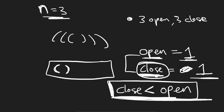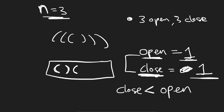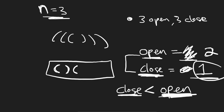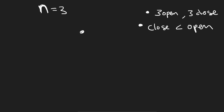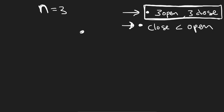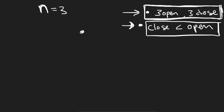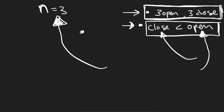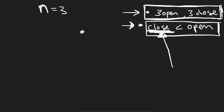So if, for example, we add another opening parenthesis, now we update our open count to two. We have two open and one closed, so now we're allowed to add a closing parenthesis. Basically, these are the two rules for backtracking. The base case is once we have three open and three closing parentheses, we have a valid formation. And the condition tells us: we can add open parentheses as long as the count is under N, but we can only add a closing parenthesis if the number of closing so far is less than the number of open parentheses.